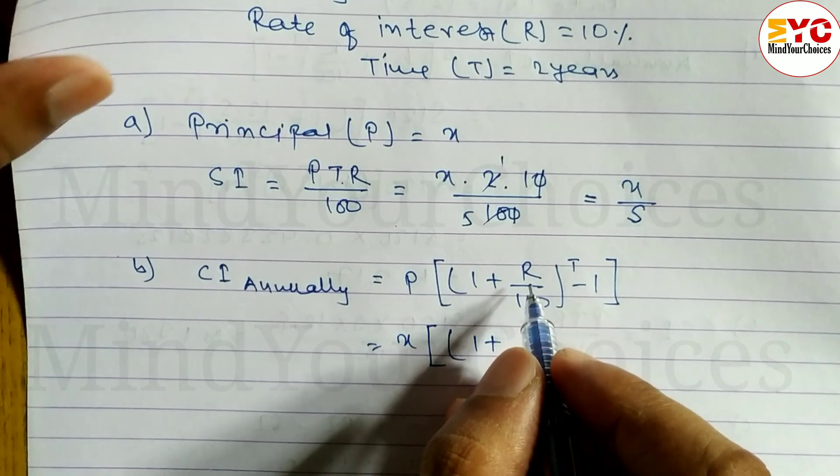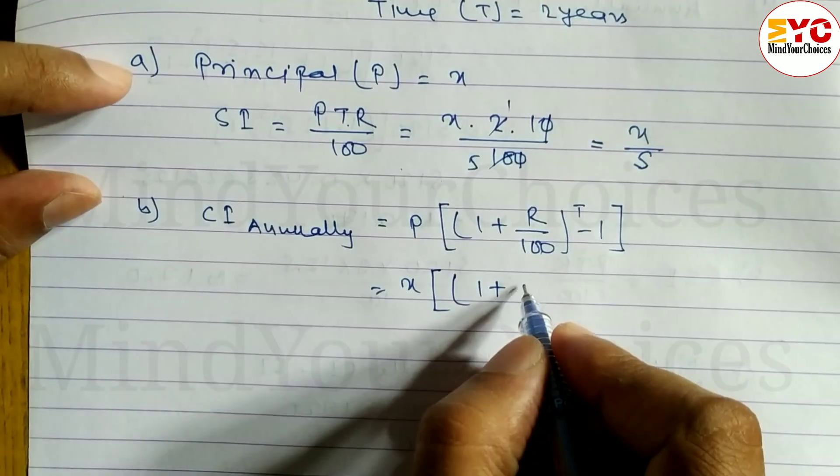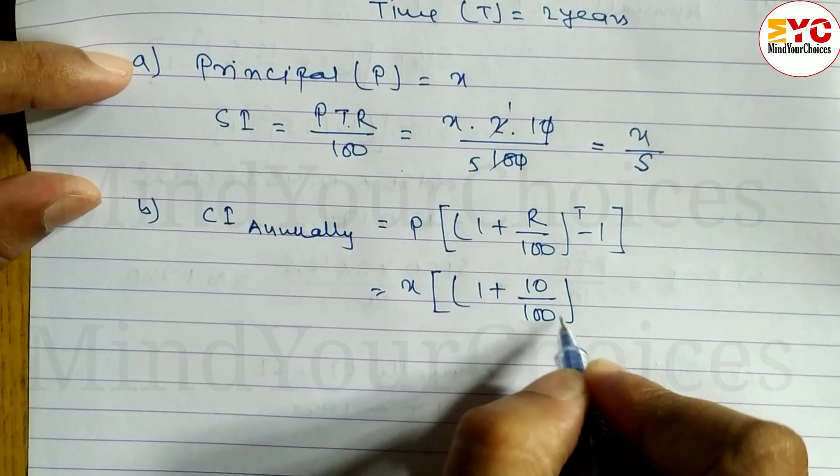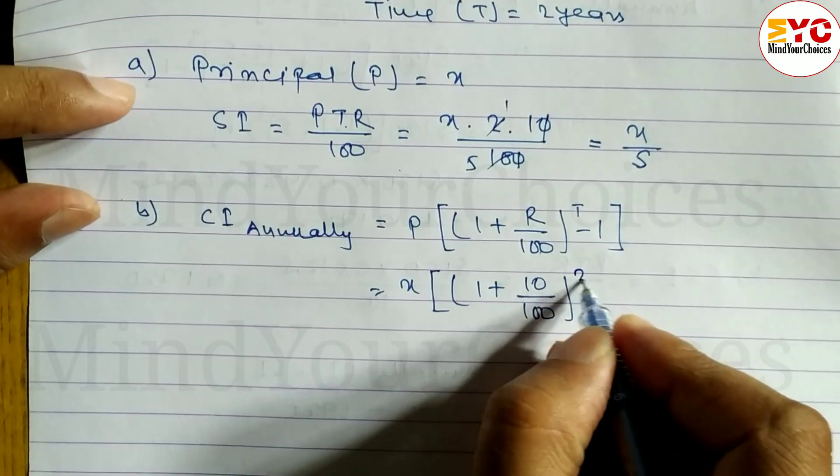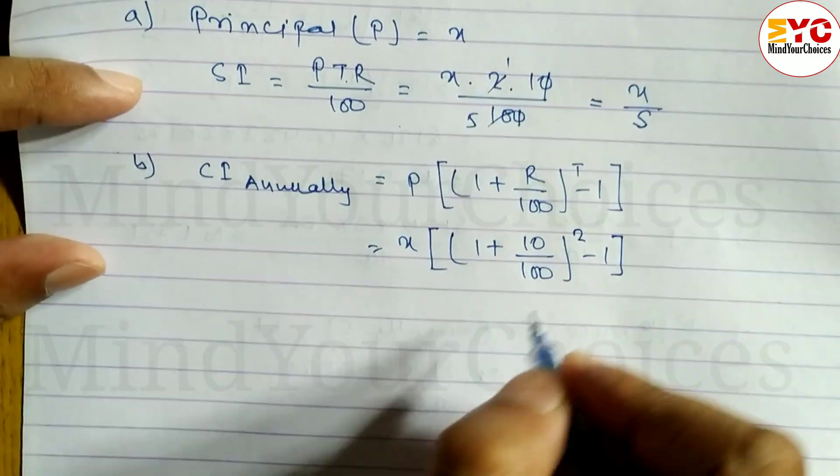1 plus R, the value of R is 10, so we write here 10 divided by 100, power T. Time is 2 years, so power 2 minus 1. I will just calculate.